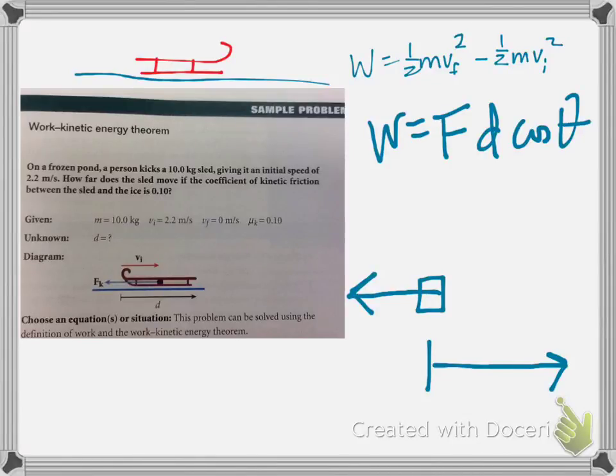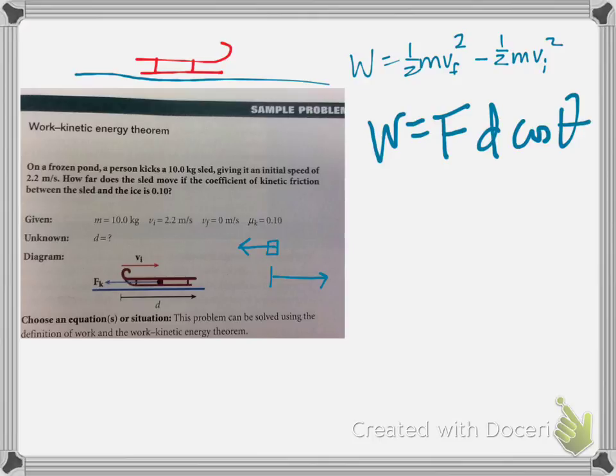Okay, so we know all these things. We have our handy-dandy little diagram here. We know that the final velocity is what? Zero. It's coming to a stop. So we can get rid of that.